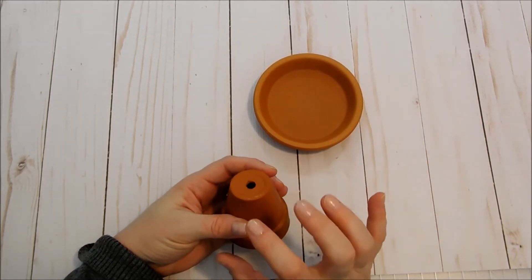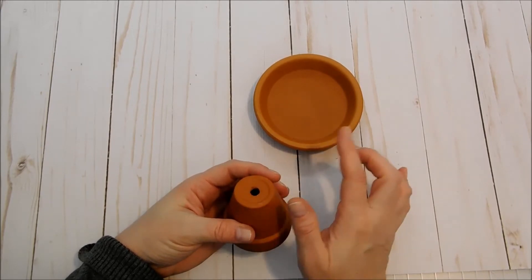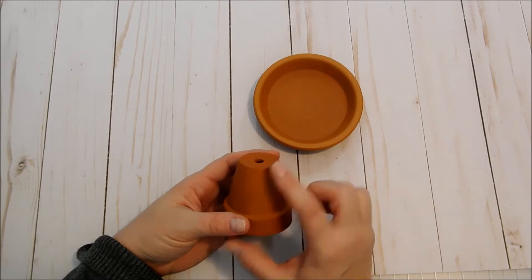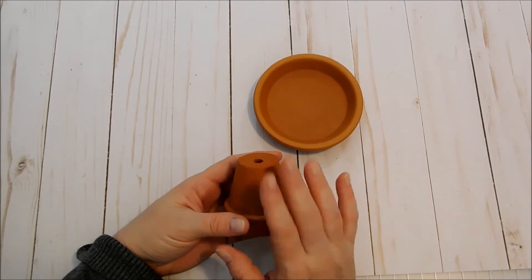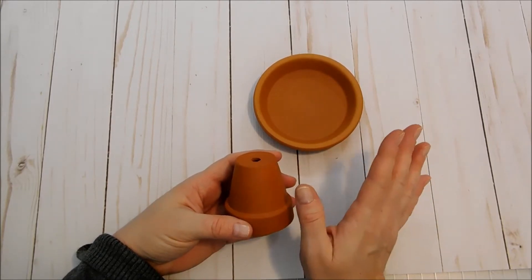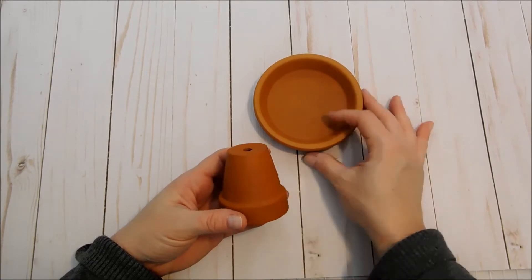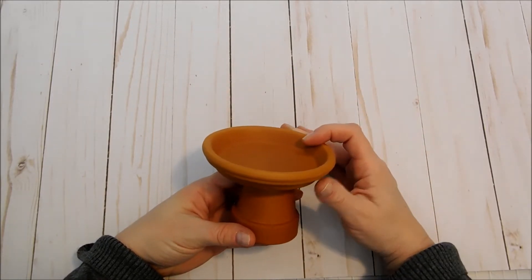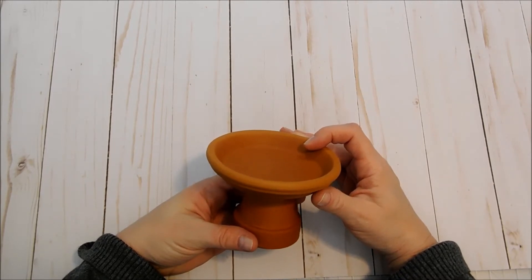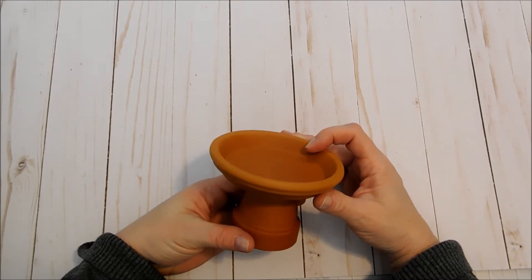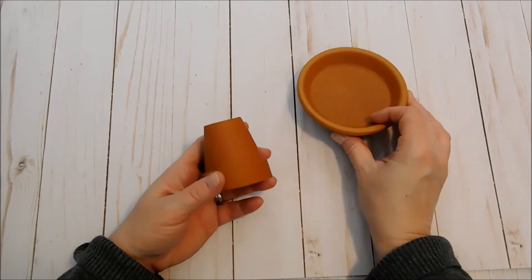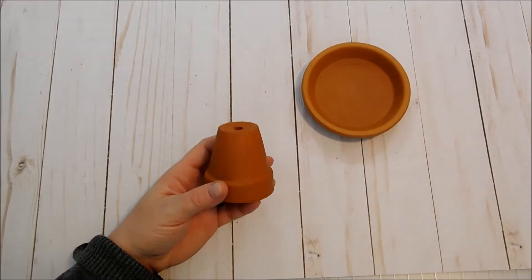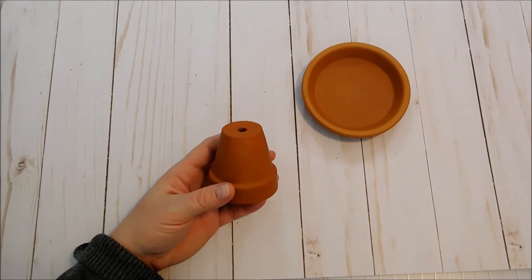So again you guys can use E6000 if you want it to hold permanently. But I'm just going to use hot glue because I really like to reconfigure these things and use them for something different later on when I get a new idea. So you could do that for your cupcake stand, for your garden party themed event in the springtime, whether it's Mother's Day or just a ladies dinner, whatever it might be. I thought it would be just adorable.